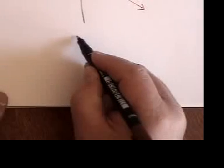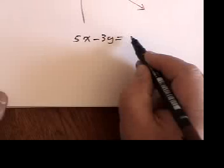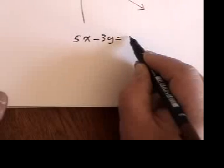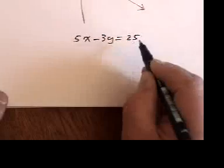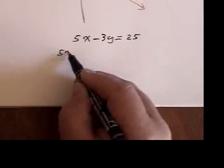Now what happens if we have negatives in there? Like 5X subtract 3Y equals, let's say, 25. And we may end up with fractions as well. So I write it down twice.